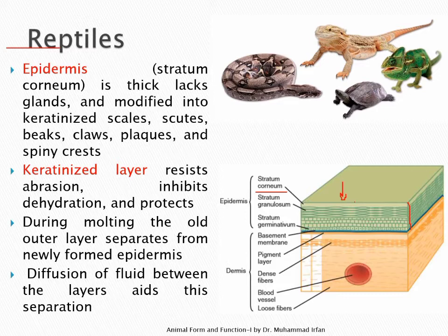Hair, nails, feathers, horns, claws, hooves, and scales are made up only of keratin protein fibers. These fibers are interlinked with each other, making a hard structure even without any deposition of calcium.